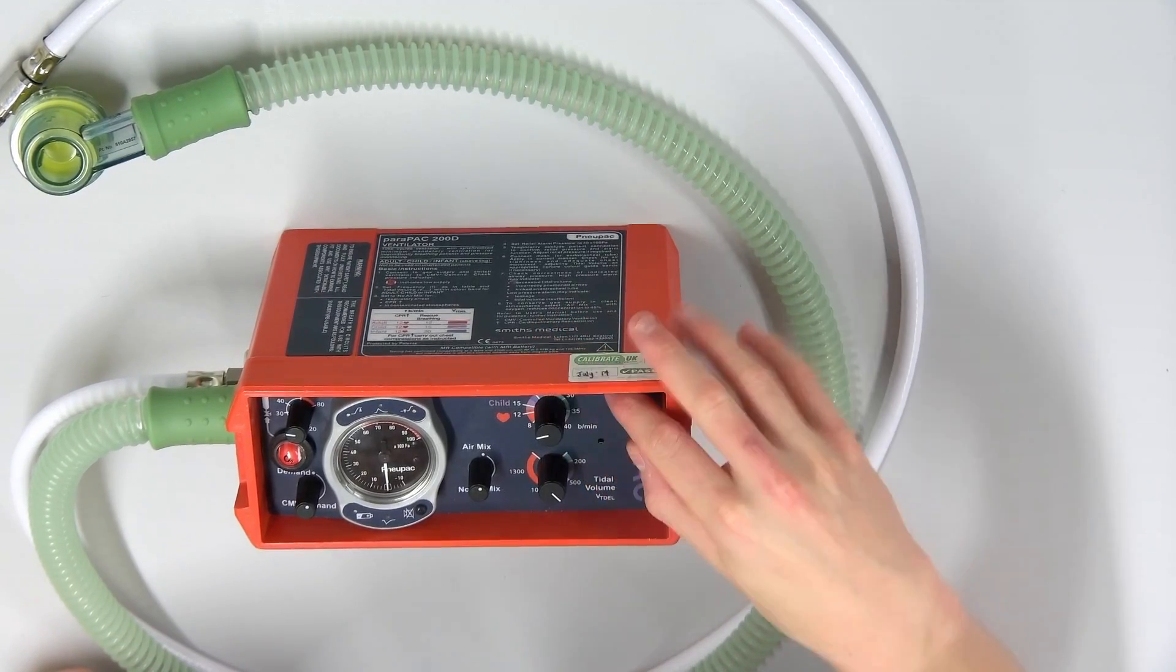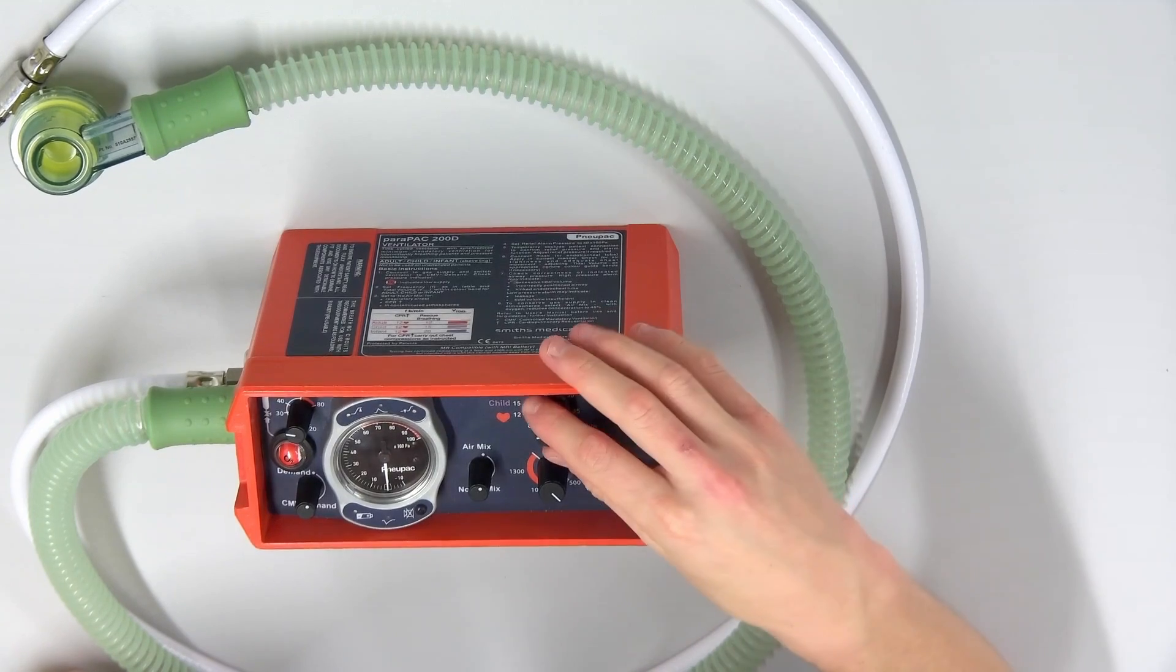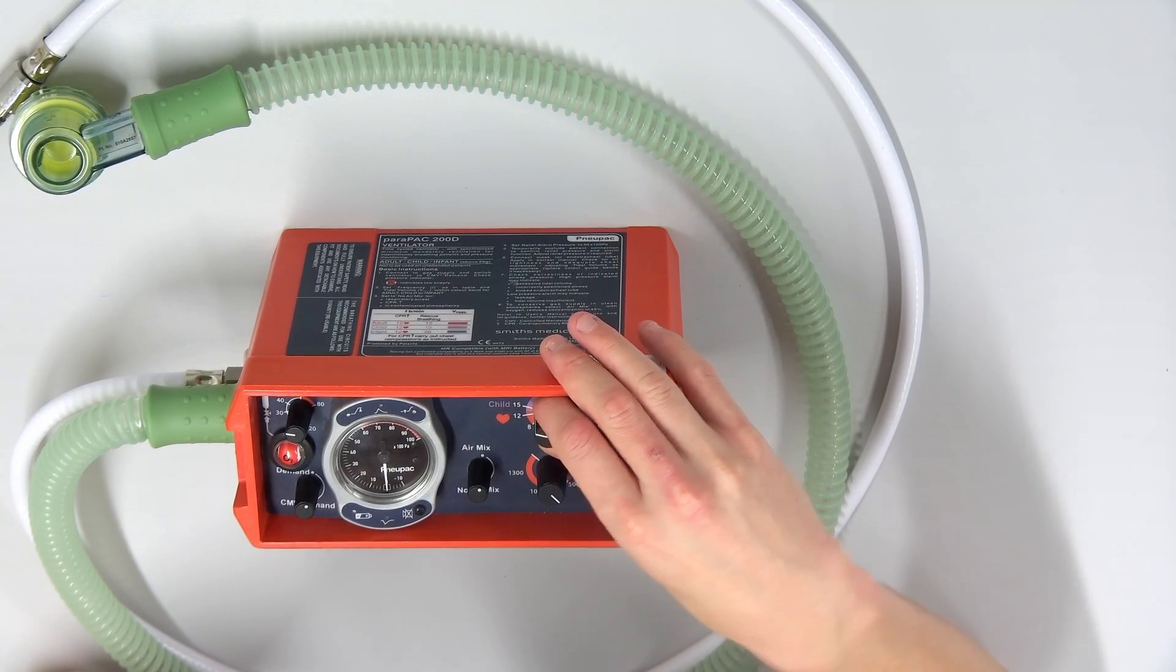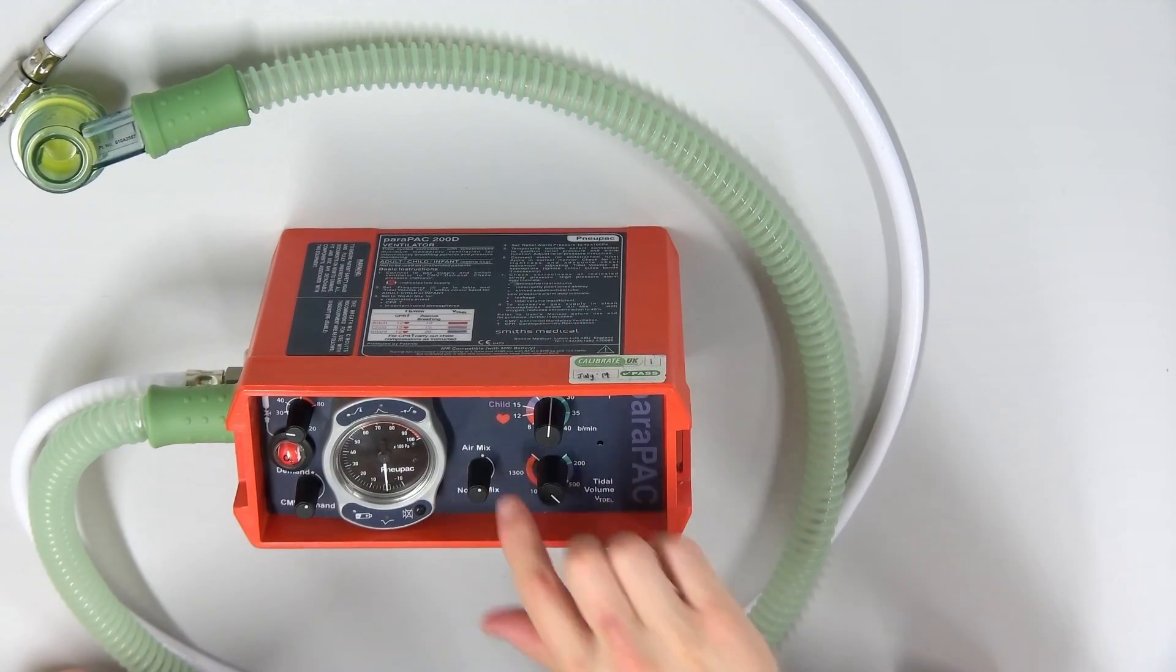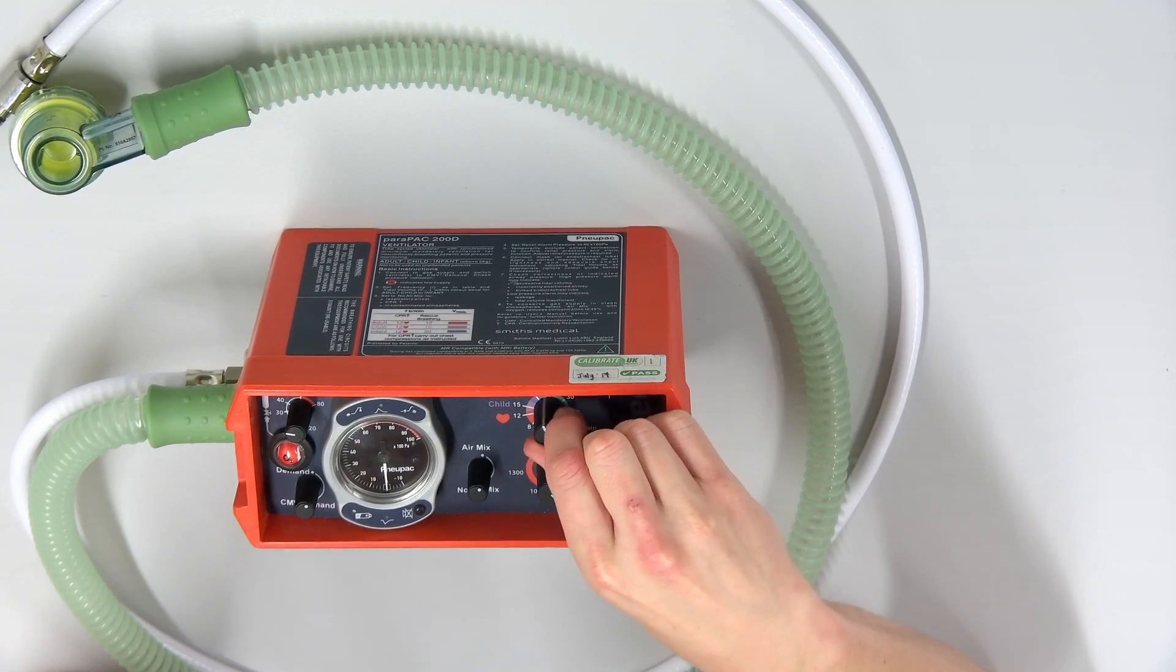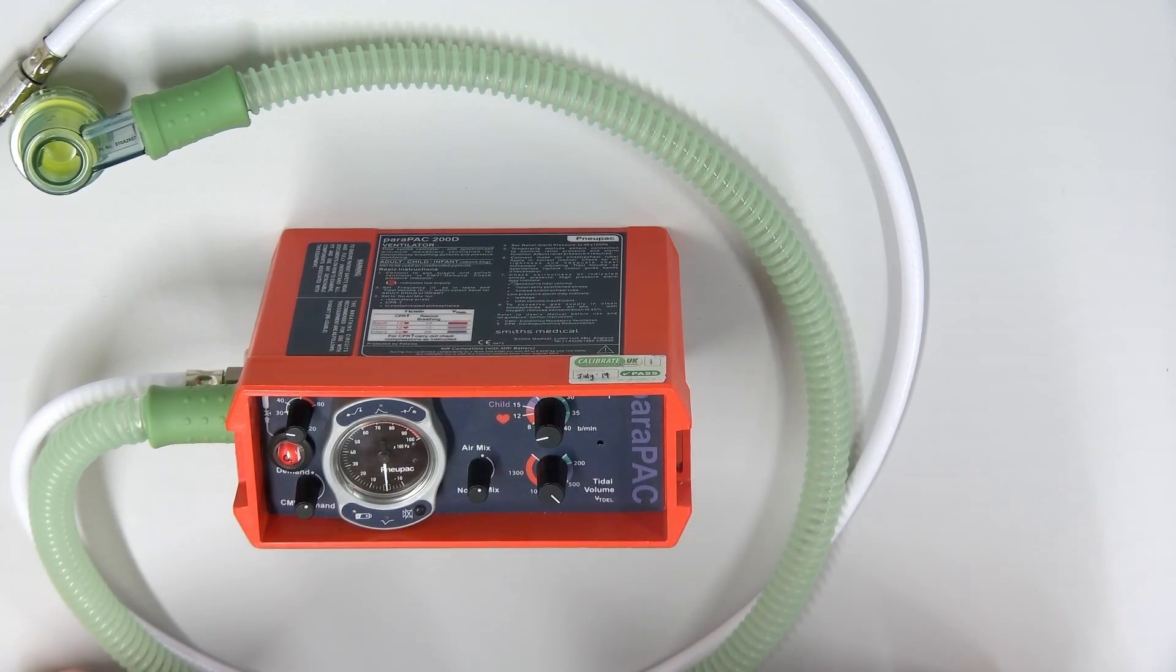Up here we have our frequency or our respiration rate or breath rate per minute. An adult would be in the red, a child would be in the purple, and the infant would be in the blue. So children breathe faster, adults breathe slower. The heart symbol here is actually a CPR rate, so that'll give a ventilation rate at one breath every five to six seconds.